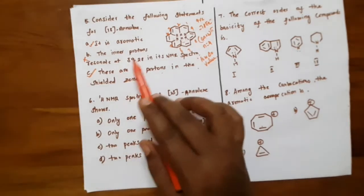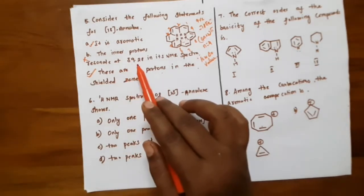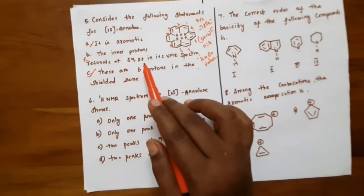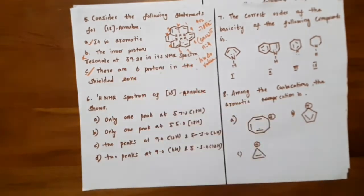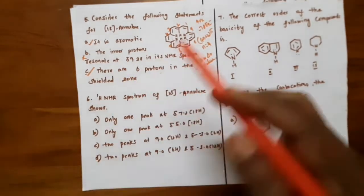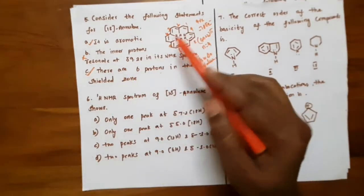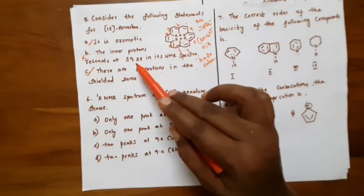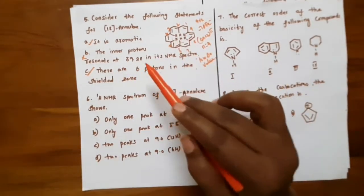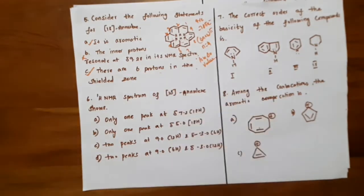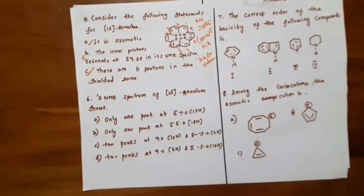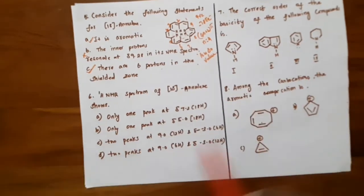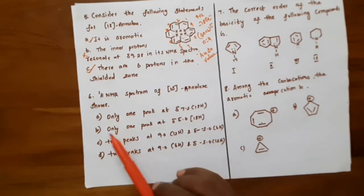Option B states that these inner protons have a high delta value of 9.28, which is wrong. Because the inner protons actually have low delta value — they are in the shielded zone. The 9.28 chemical shift would mean highly deshielded, which is incorrect for the inner protons.